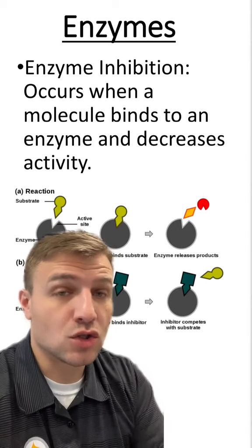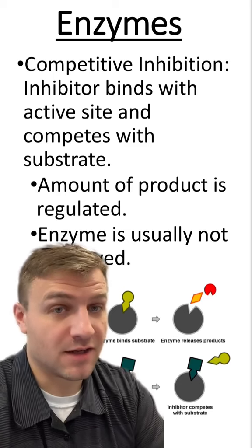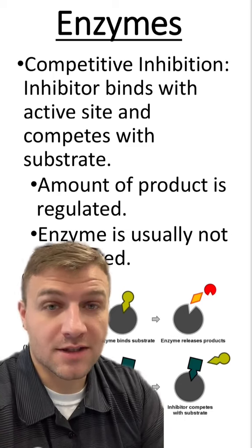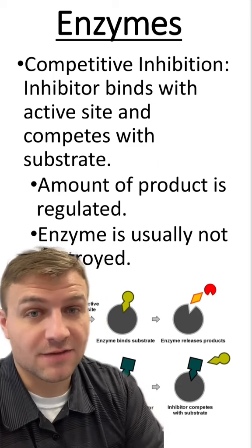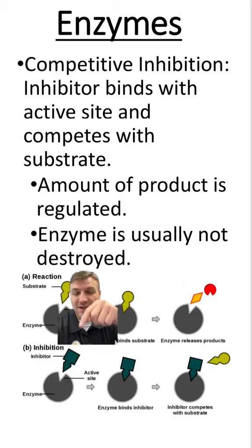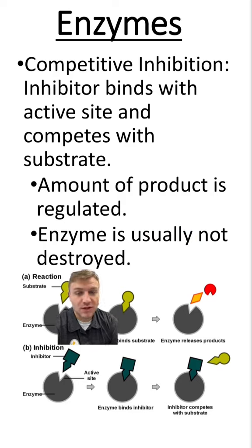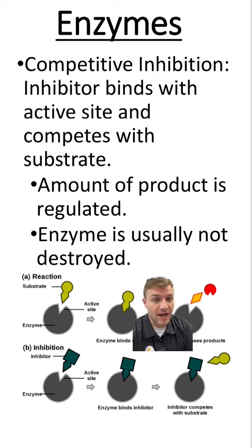So there are two main types of enzyme inhibition. The first type is called competitive inhibition. The inhibitor is going to compete with the active site of the enzyme. You can see what that normal reaction looks like here. The inhibitor will have a shape somewhat like the substrate and it will bind to that active site, and as you can see, the enzyme isn't going to be able to bind with its substrate, which stops the reaction.